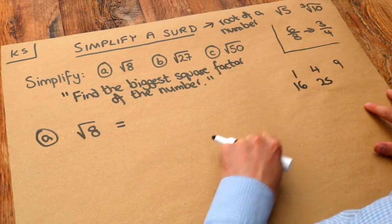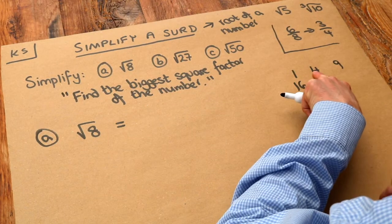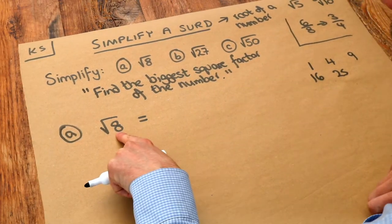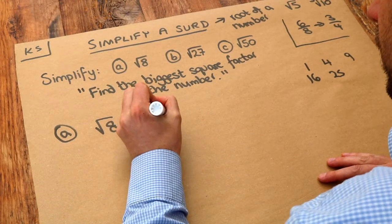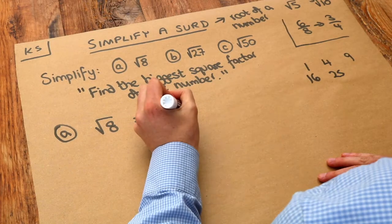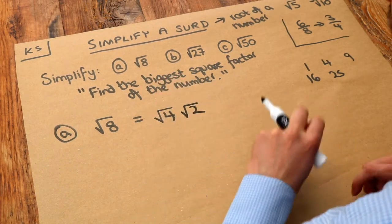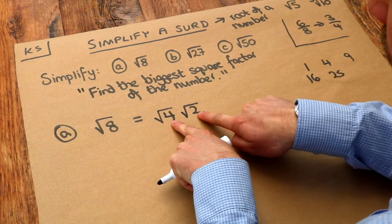Now what's the biggest one of these numbers that goes into 8? Well it's 4, isn't it? So 4 is a square factor of 8. The way we do it is we write that square factor first, and then we think, 4 times what is 8? It's 2, so we write root 2. The reason this works is because when you multiply two surds together, we just multiply these numbers. So root 4 times root 2 is root 4 times 2, which is root 8.